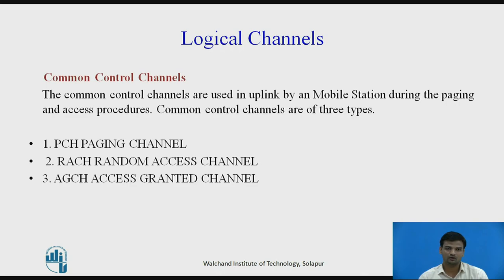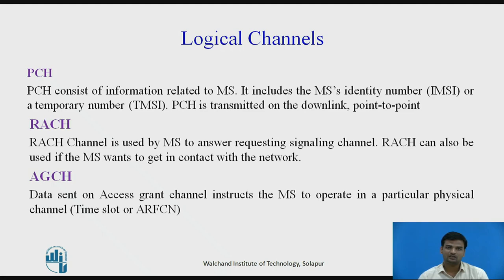The next group is the common control channels, used by the MS during paging and access procedures. There are three types: PCH (Paging Channel), RACH (Random Access Channel), and AGCH. Within a certain time interval, the MS listens to the PCH to see if the network wants to contact it — for an incoming call or short message. If the MS realizes it is being paged via the PCH, it answers by requesting a signaling channel on the RACH. The RACH can also be used when the MS wants to initiate contact with the network.